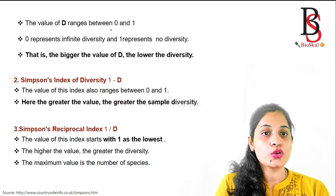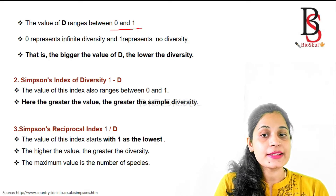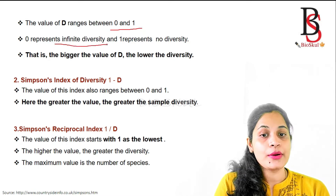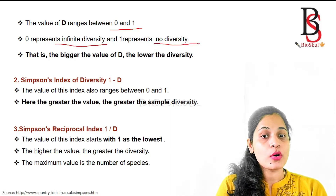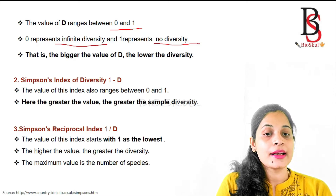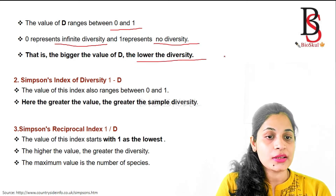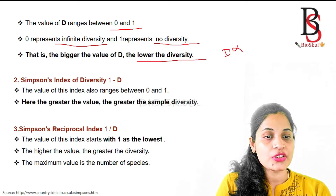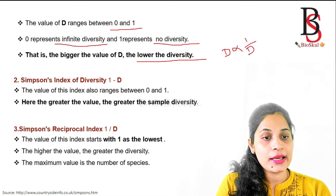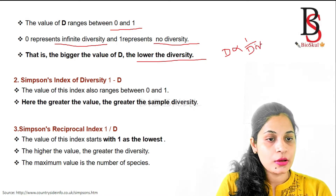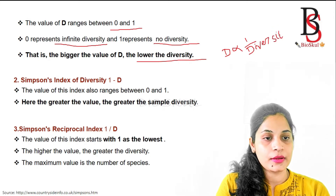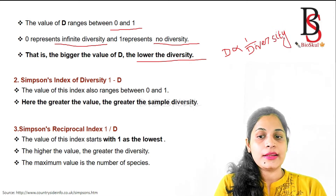The value of D, Simpson's Index, ranges from 0 to 1, where 0 represents infinite diversity and 1 represents no diversity. Simpson's Index D is inversely proportional to diversity — if the value of D is higher, the diversity is lower.